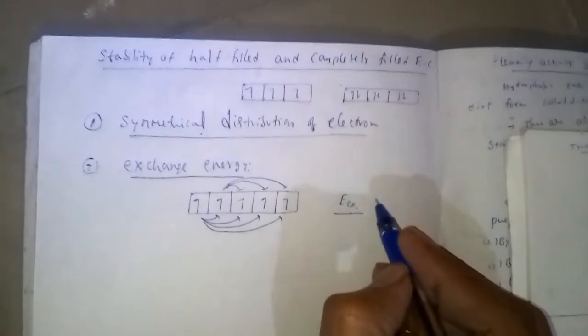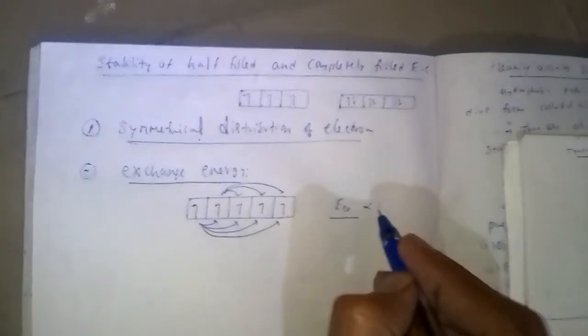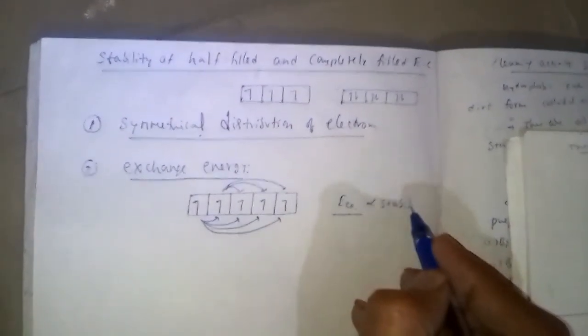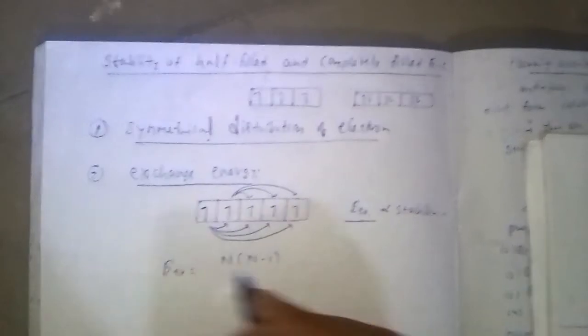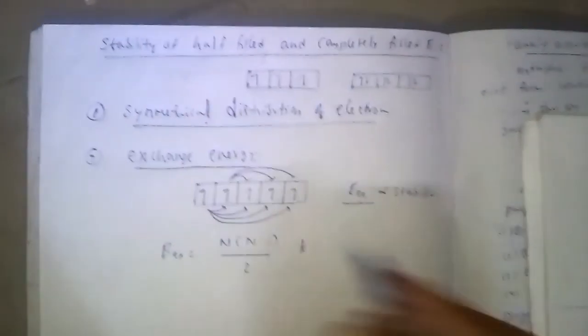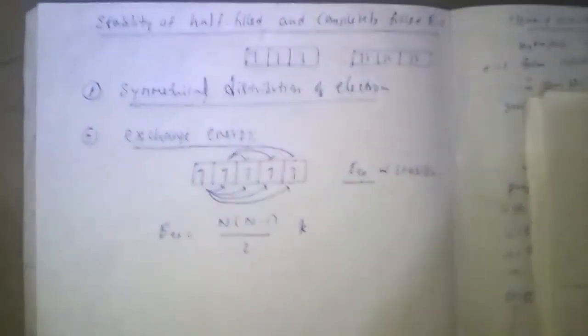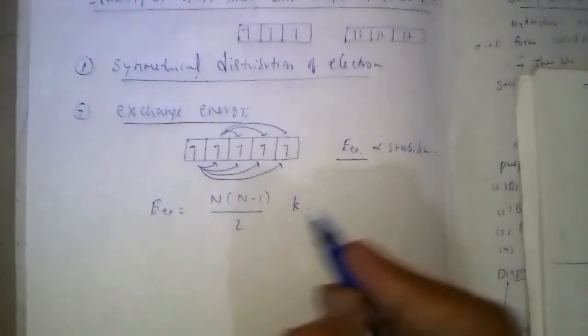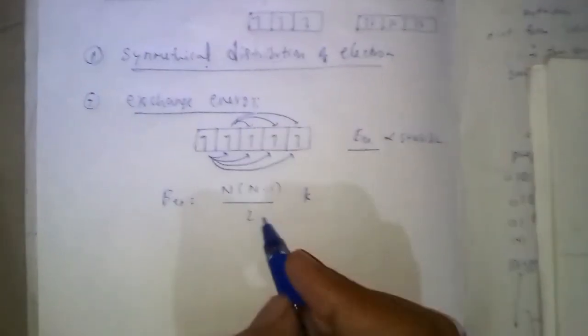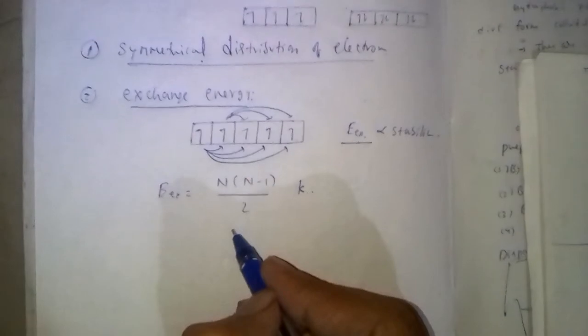The exchange energy is directly proportional to stability. This exchange energy is calculated by formula n(n-1)/2k, where k is the constant for a particular metal atom. n is the number of parallel spin electrons.